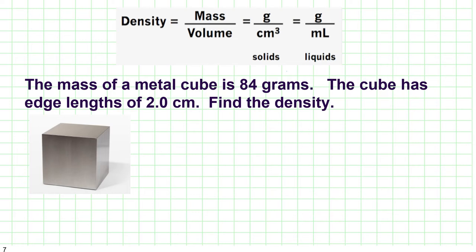So here I have a solid metal cube. The mass is 84 grams. So we know that's going to go into the numerator of our formula. The edge lengths are two centimeters. We might be tempted to do 84 divided by two. But remember that we need the volume, not a length.